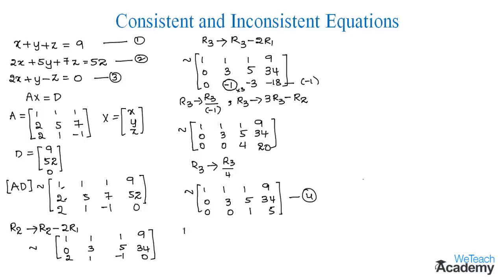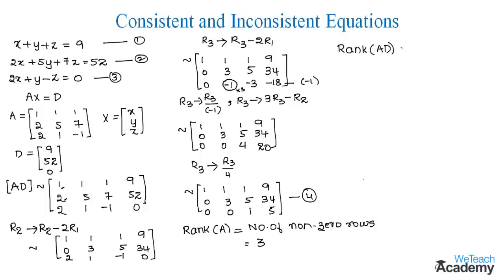Now we find the rank of matrix A, which equals the number of non-zero rows. Observing the coefficient portion of the upper triangular matrix, we see 3 non-zero rows, so rank(A) = 3. Similarly, observing the last column in equation 4 for the augmented matrix [A|D], we also have 3 non-zero rows, so rank([A|D]) = 3.